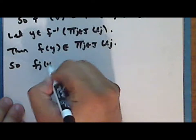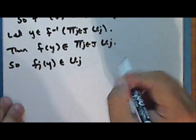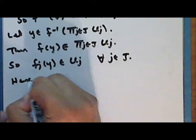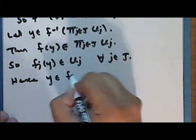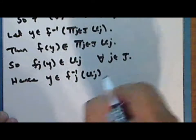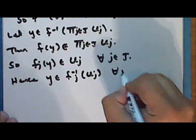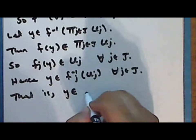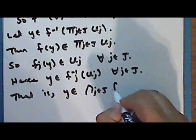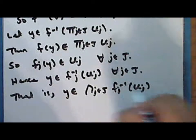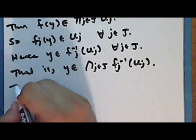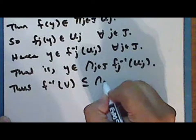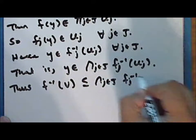So f_j(y) is in the set u_j for every index j, and hence y is in the inverse image of u_j under the j-th coordinate function for every index j. That is, y is in the intersection of the inverse images of u_j under the j-th coordinate function. Thus the inverse image of V is a subset of the intersection of the inverse images of the sets u_j.